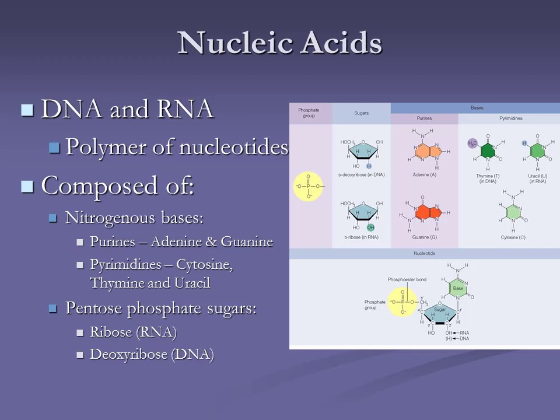In DNA, we have A, T, C, G. But in RNA, we don't have one of these bases — it's replaced with uracil. Uracil is also a pyrimidine.